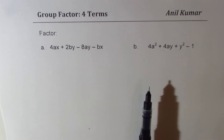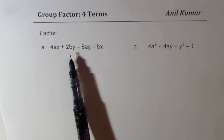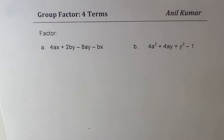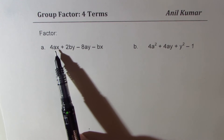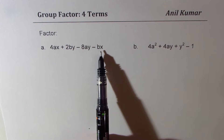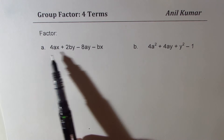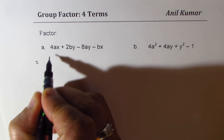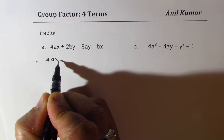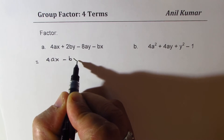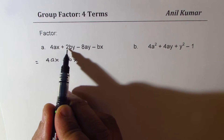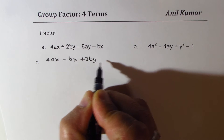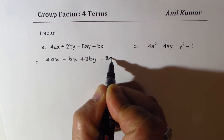If you analyze them, we could group them into twos and then factor. Since we have ax, the term minus bx also has an x, so we could group 4ax with minus bx. So the first step will be 4ax minus bx, and we are left with 2by minus 8ay.